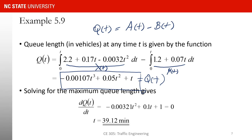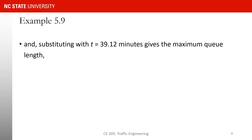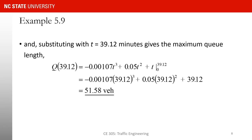Setting dQ/dt equal to zero gives: -0.0032t² + 0.1t + 1 = 0. Solving this yields t equal to 39.12 minutes — that is the time of the longest queue. Substituting back into Q(t), Q at t = 39.12 equals 51.58 vehicles. That is the longest queue in the system.